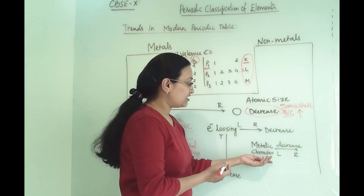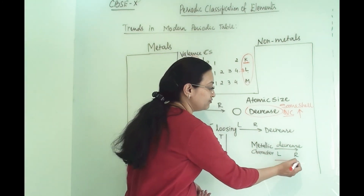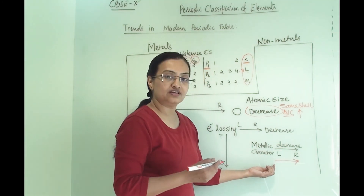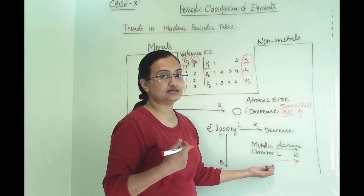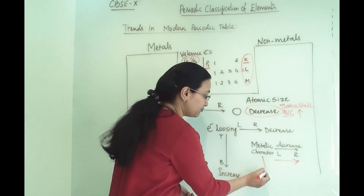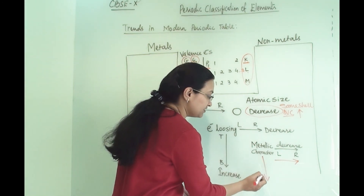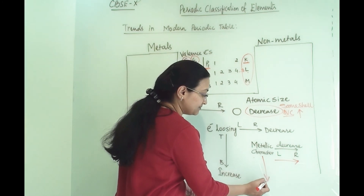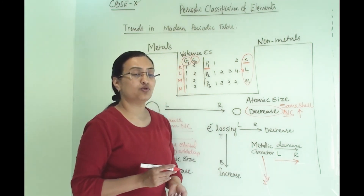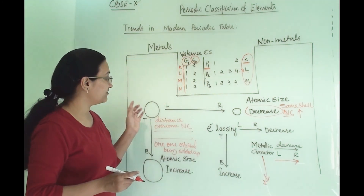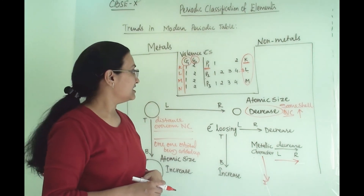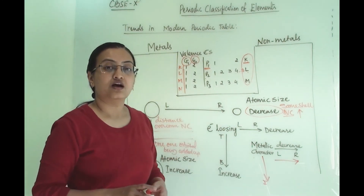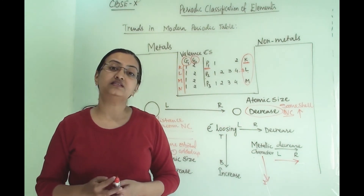Metallic character decreases from left to right and increases from right to left. As we go from top to bottom, the metallic character will increase. So these are some of the important trends in the periodic table. This way you can remember all the trends along with their reasons.